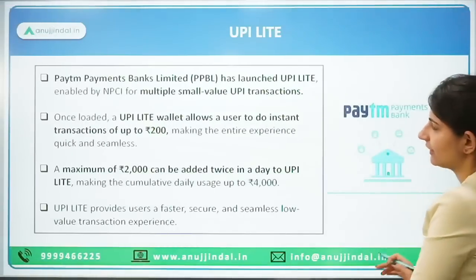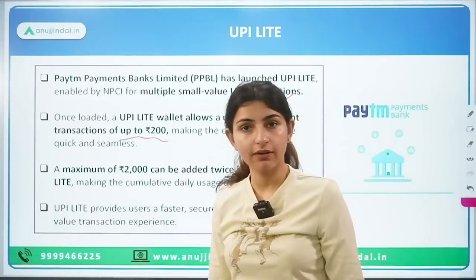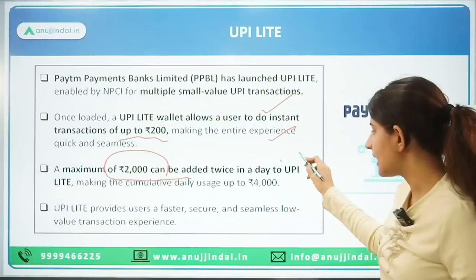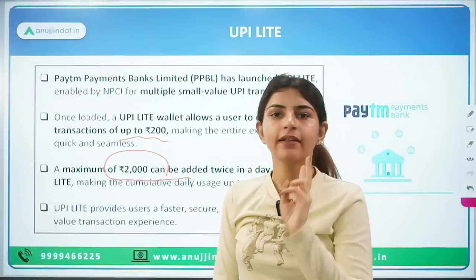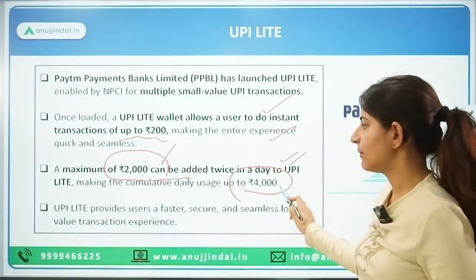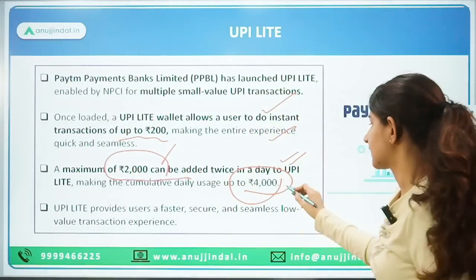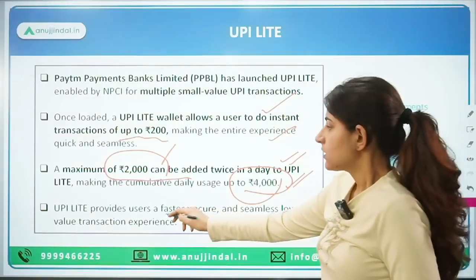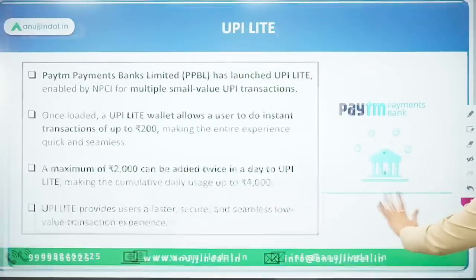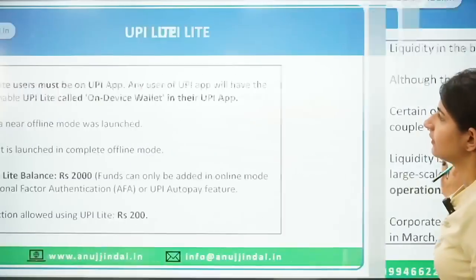Under Paytm's UPI Lite, a maximum of 2000 rupees can be added twice a day, making the cumulative daily usage 4000 rupees. The per-transaction limit is 200 rupees. UPI Lite provides users a faster, secure, and seamless low-value transaction experience. Paytm Payment Bank is the first payment bank to completely launch UPI Lite on its app.